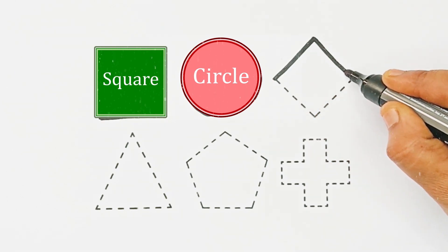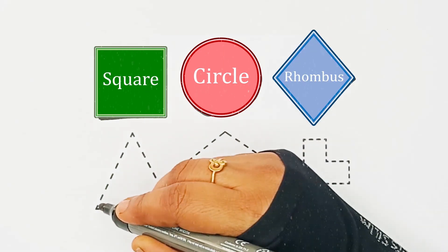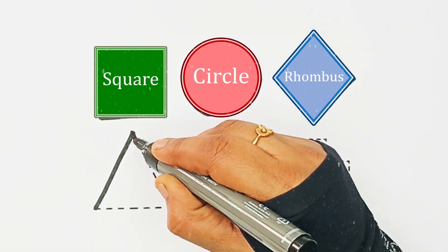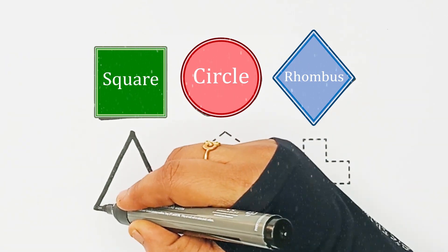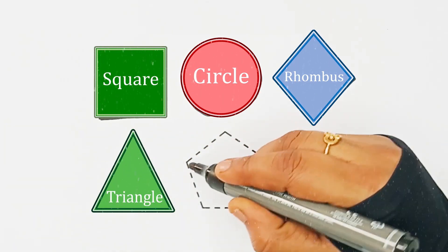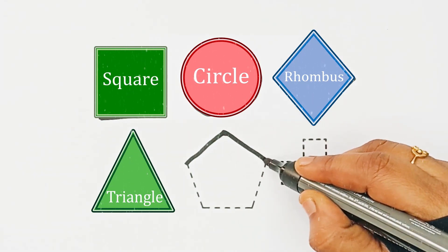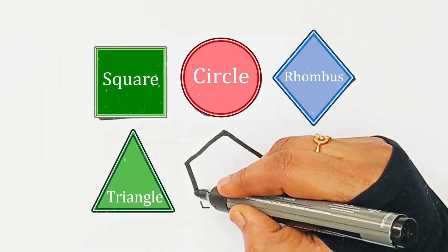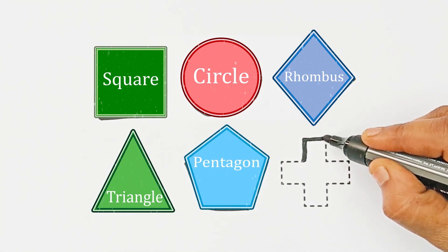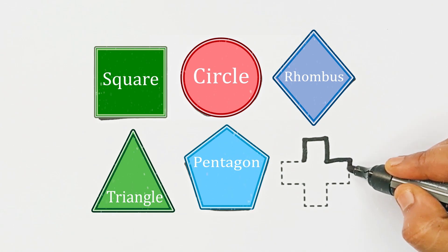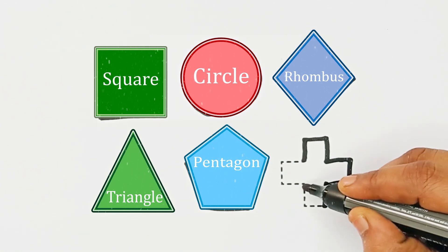Rhombus. Rhombus. Triangle. Triangle. Pentagon. Pentagon. Cross. Cross.